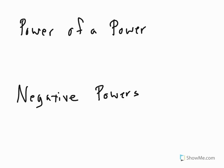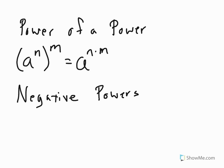Now we're going to look at power of a power and negative powers. Power of a power says that if you have some number a to the power of n being raised to another power of m, that equals a to the n times m — you just multiply your exponents. With numbers, this would be something like 4 cubed to the fourth power, which would equal 4 to the twelfth, because you're taking the 3 times the 4.